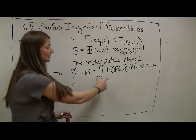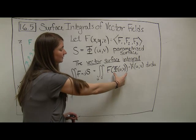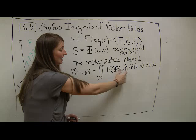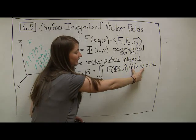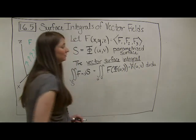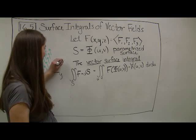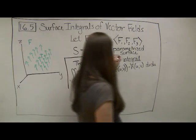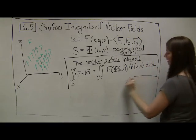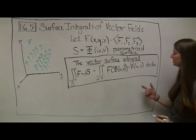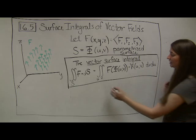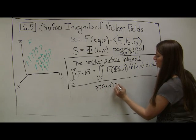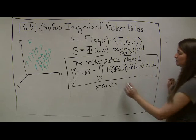We compute it by taking f of our surface as parametrized by phi, and dotting that with the normal vector n of u, v, dv du. This is the way that we compute vector surface integrals, so I'm going to put a box around it. A couple of things to point out: recall that our normal vector n of u, v is going to be computed the exact same way that we computed it previously.